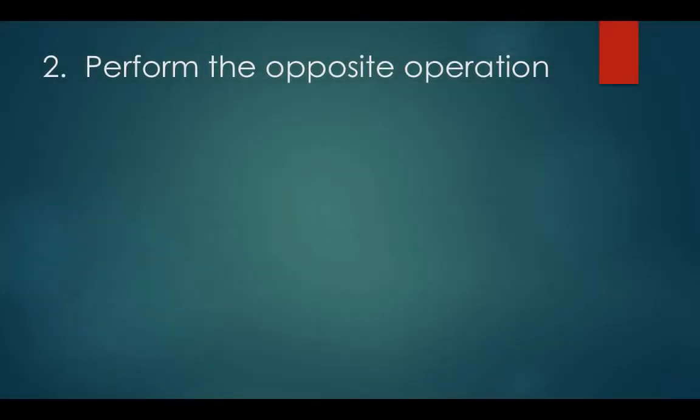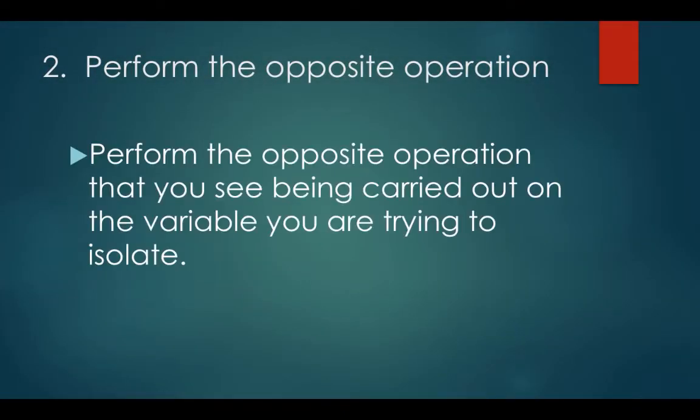2. Perform the opposite operation. When removing the operation to the variable that is to be isolated, perform the opposite operation that you see being performed to it. Divide if you see multiplication, multiply if you see division, add if you see subtraction, subtract if you see addition, square if you see a square root, and square root if you see a square.